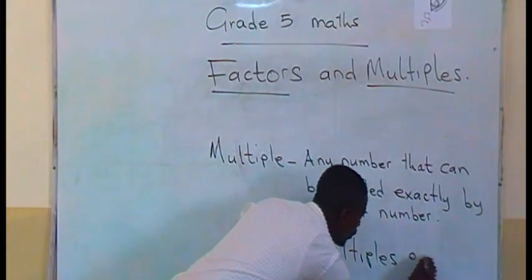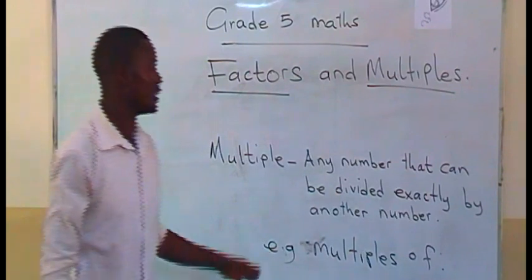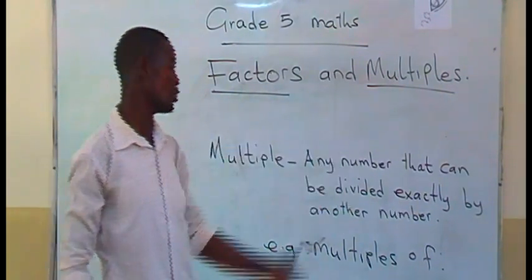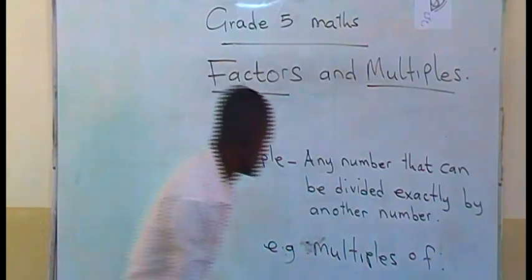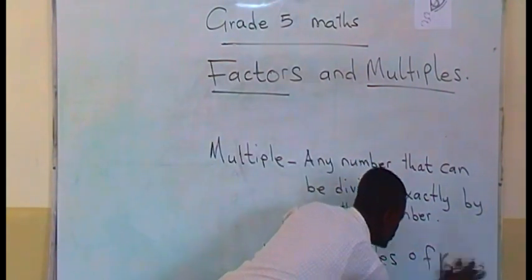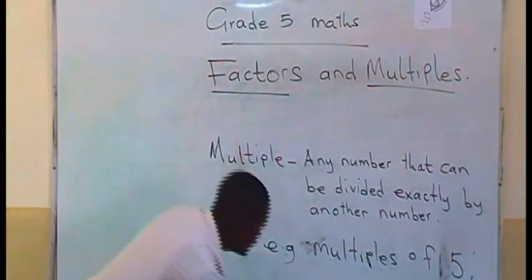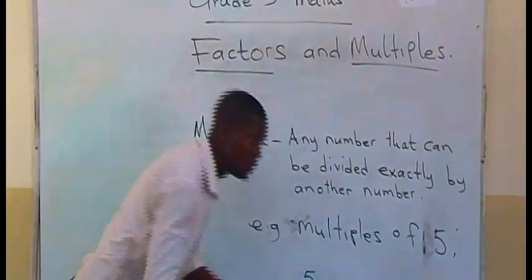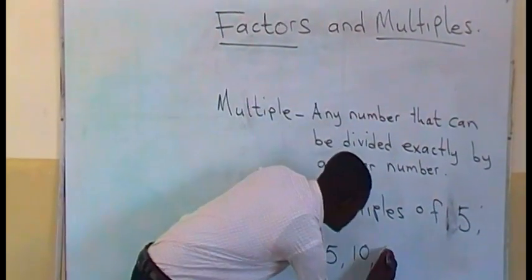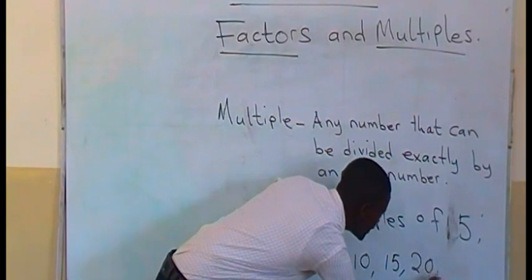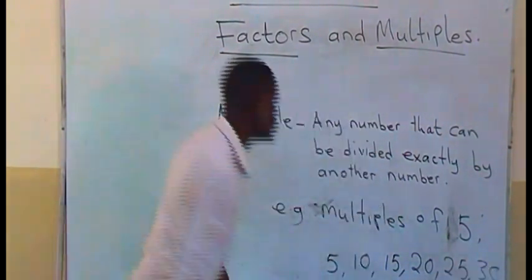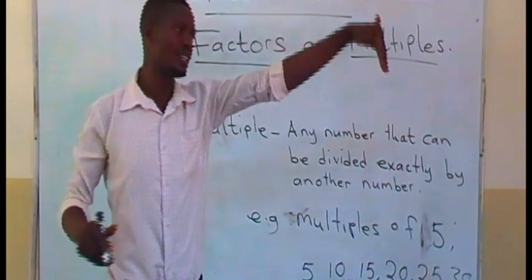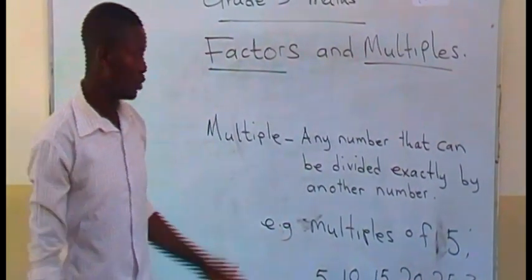If we say multiples of 5, it means these are numbers where 5 can go in exactly without leaving any remainder — those are multiples of 5. Starting from 5, the next multiple is 10, then 15, 20, 25, 30. You simply count in 5s. Those are the multiples of 5.